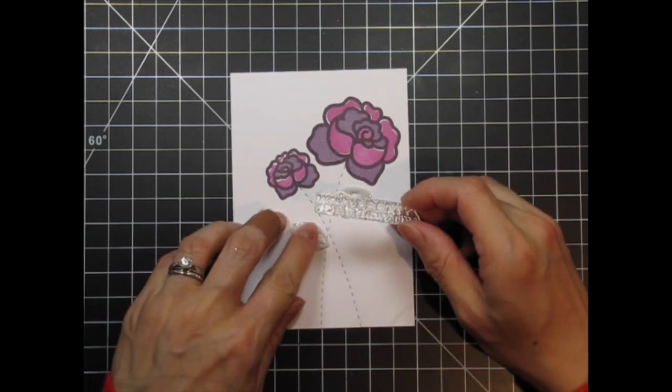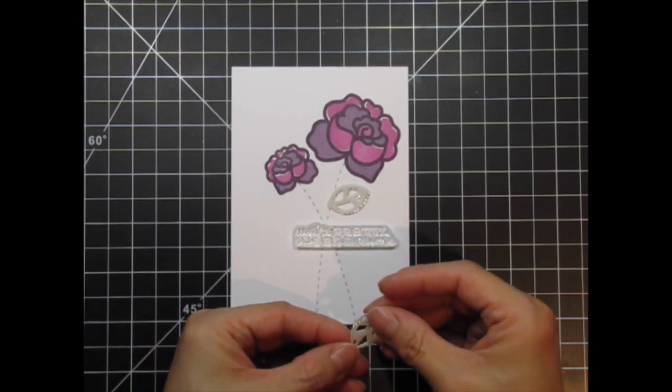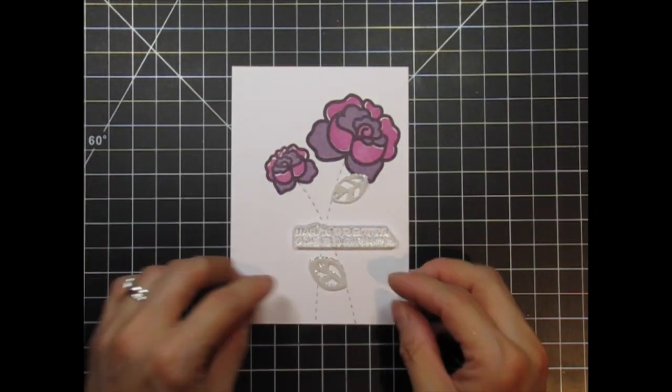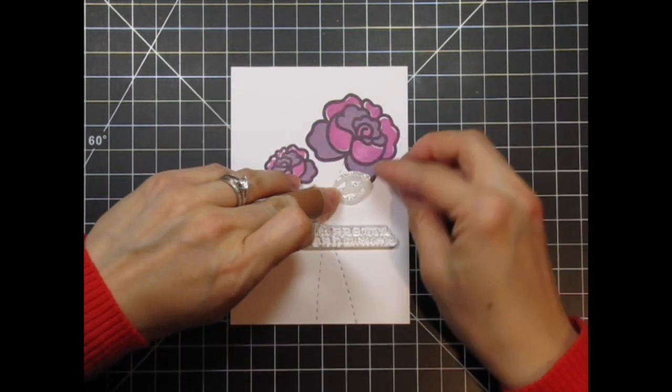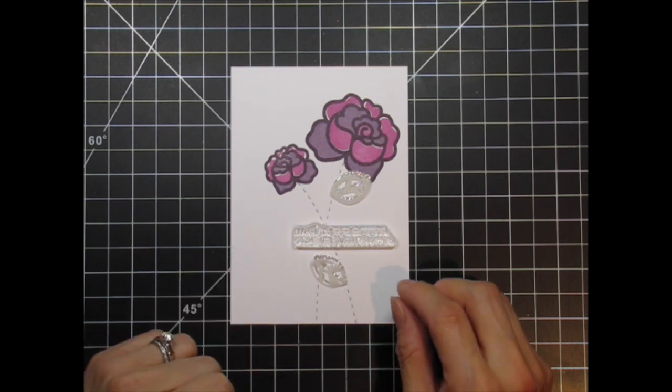Then I try out a couple of sentiments to see which one will look best with the layout I've created. As you can see, I'm constantly moving the leaves around to see if they look better elsewhere and in another direction. As the sentiment size and position changes, so does the position of the leaves.